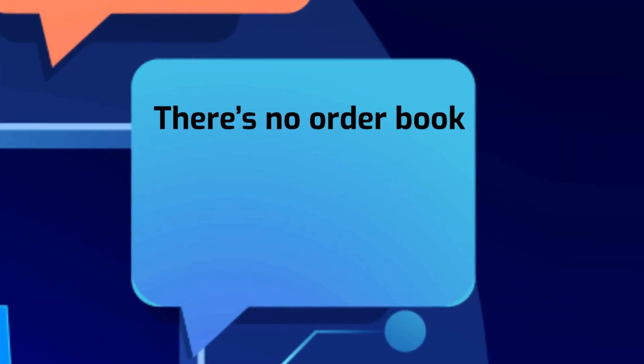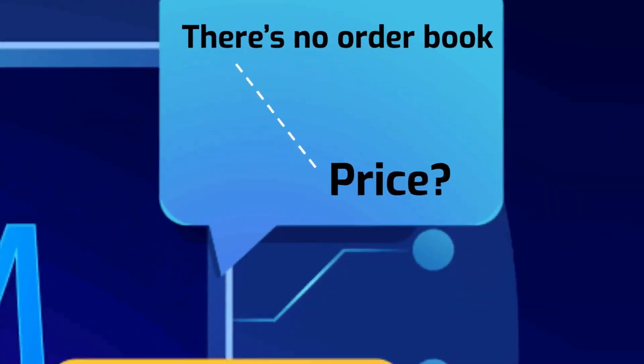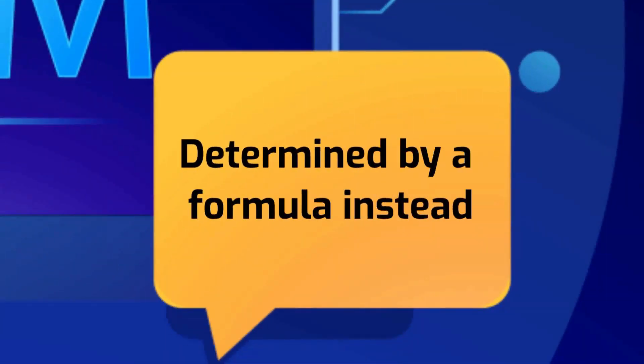Since there's no order book, there are also no order types on an automated market maker. What price you get for an asset you want to buy or sell is determined by a formula instead.